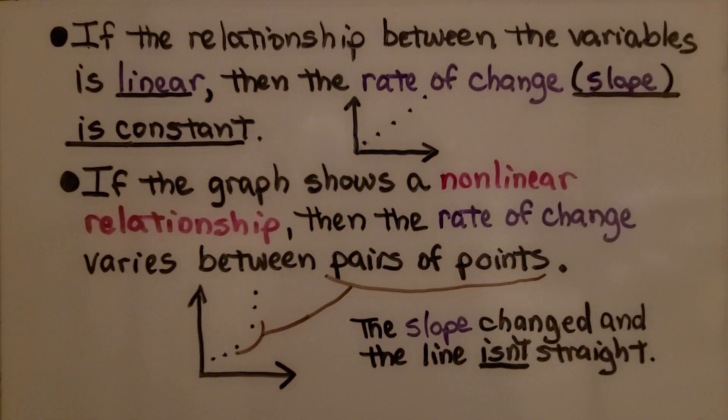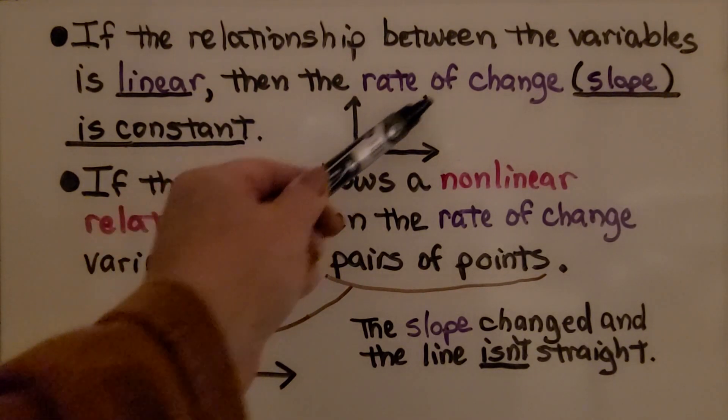If the relationship between the variables is linear, then the rate of change, the slope, is constant. We'll see a straight line.